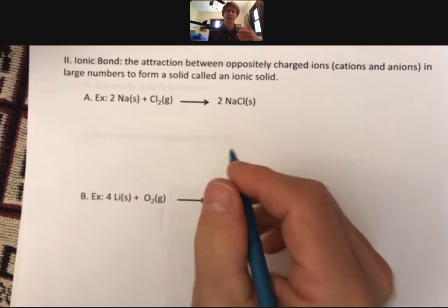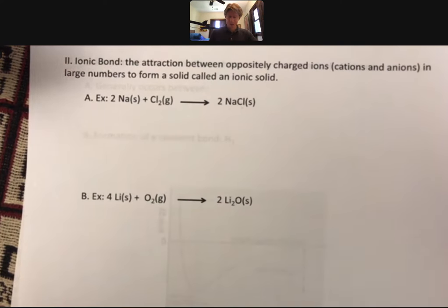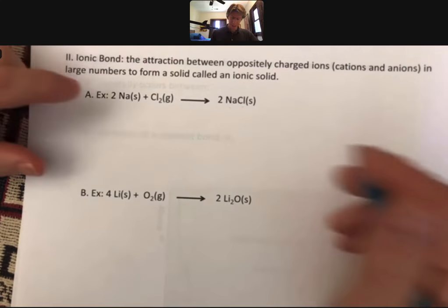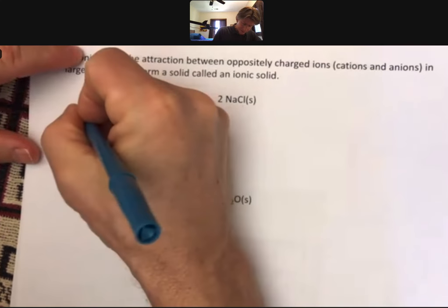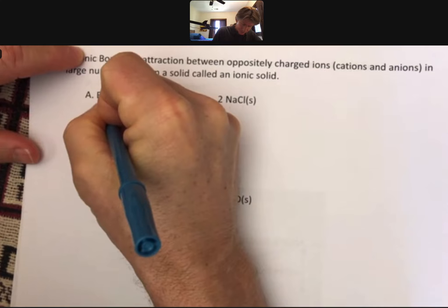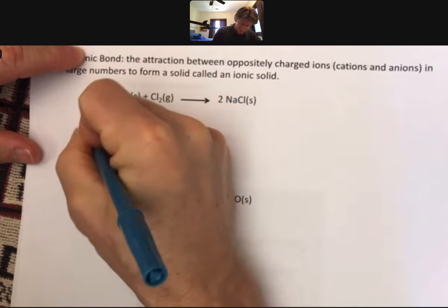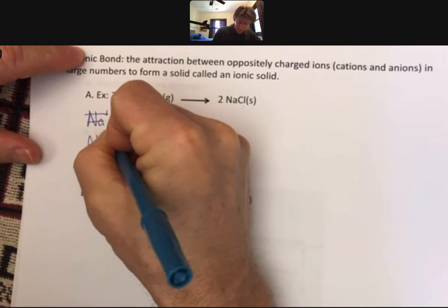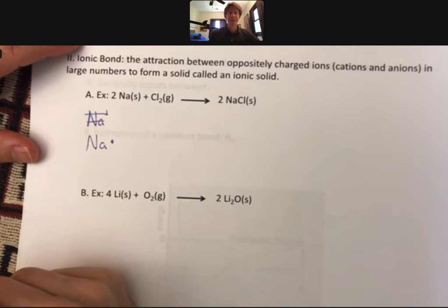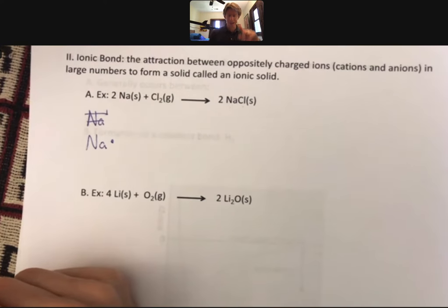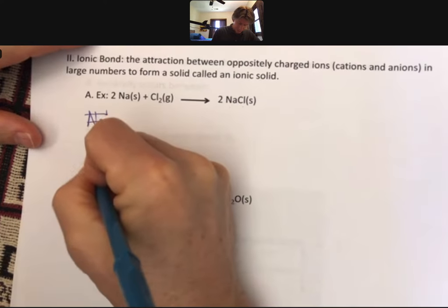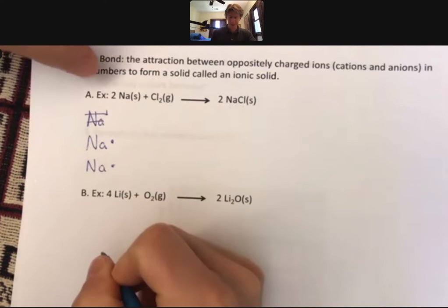If we look at this from an electron configuration standpoint, we can look at sodium as Na with a dot, because sodium has one valence electron. In fact, we have two of them - that's what the two means.